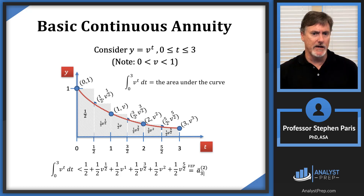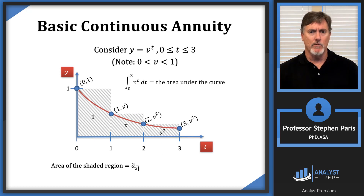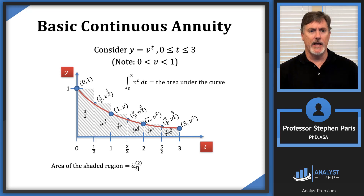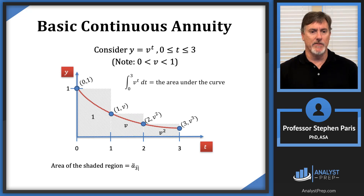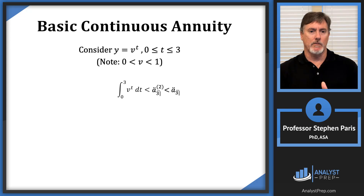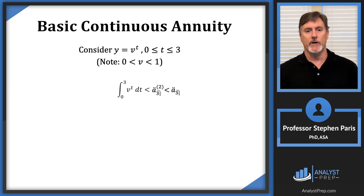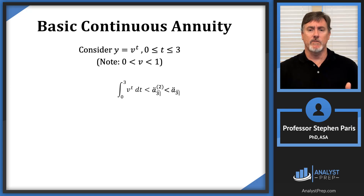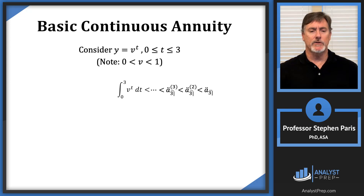Comparing these: ä_angle_3^(2) gives a better estimate than ä_angle_3, and we can order them so that the integral from 0 to 3 of v^t dt is less than ä_angle_3^(2), which is less than ä_angle_3. Using width 1/3 would give ä_angle_3^(3), an even better overestimate. As we keep going, we get better and better overestimates, converging closer to the actual area under the curve.